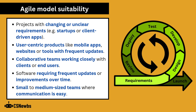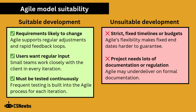The Agile model is suitable for small to medium-sized teams where communication is easy, when requirements are likely to change, when users want regular input, or when a project must be tested continuously. It's unsuitable for projects with strict fixed timelines or budgets, or if the project needs a lot of documentation or regulatory information.